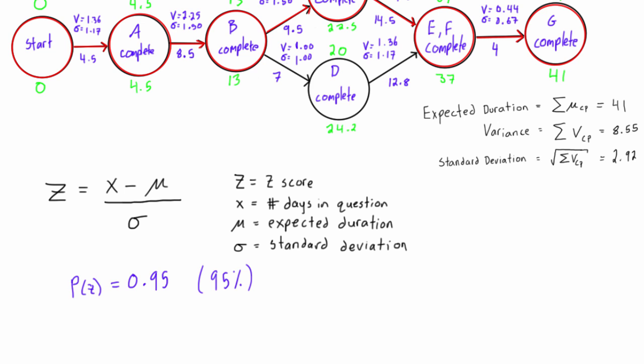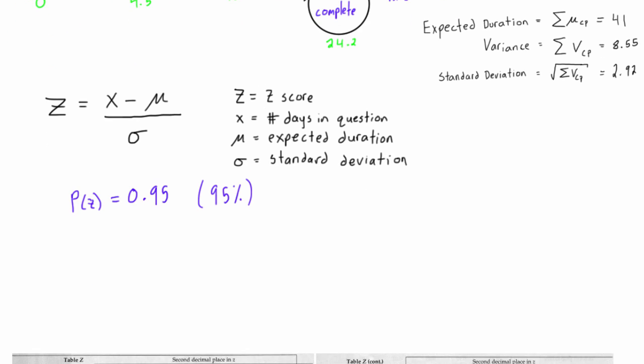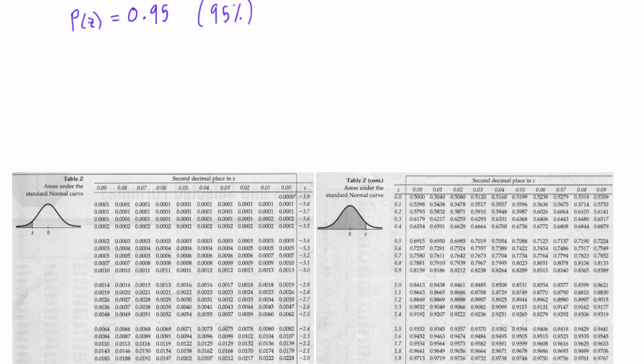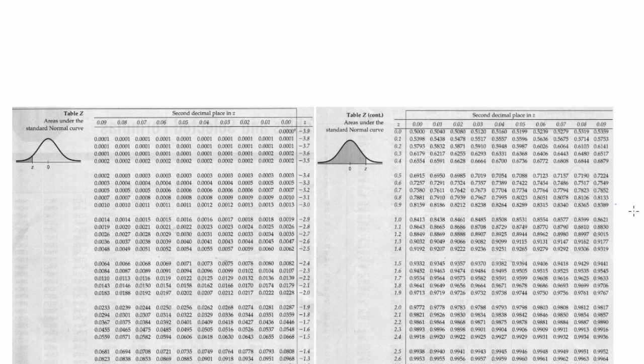All right, so what we have to do then is we go down into our z-score table, which you can find in any statistics book or just Google image search z-score tables and you'll find lots there. So we're looking for where the probability is 0.95.